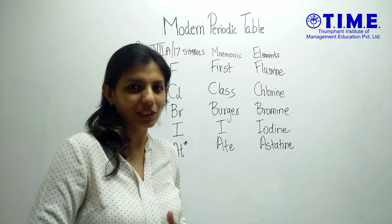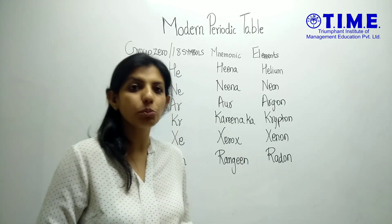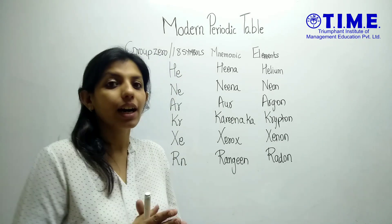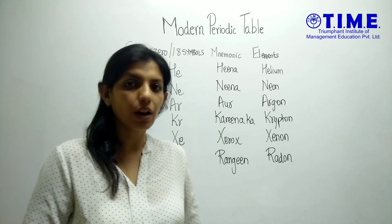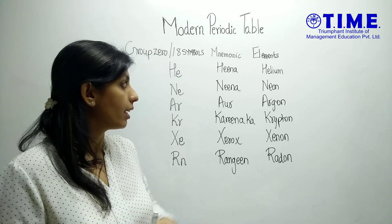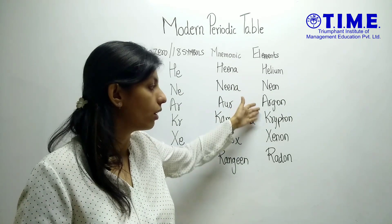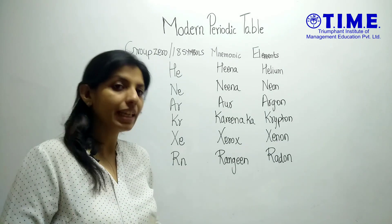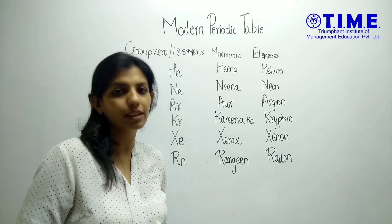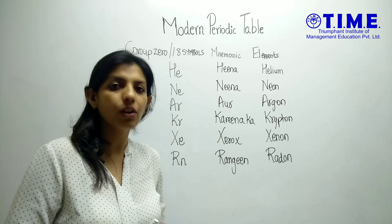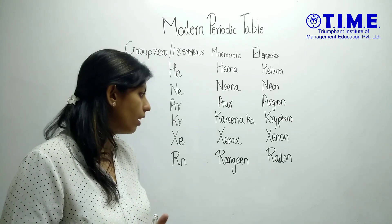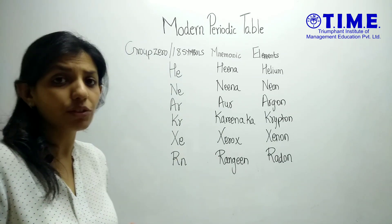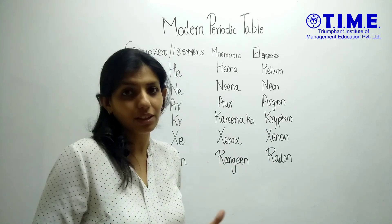We are now on to our last group of the modern periodic table — Group 18 or the zero group — which comprises the noble gases. The elements are helium, neon, argon, krypton, xenon and radon. The mnemonic goes: 'Heena, Neena aur Kareena ka xerox rangi.' This should be very easy to remember, and for Superman fans, krypton also features here — but remember it's krypton, not kryptonite!